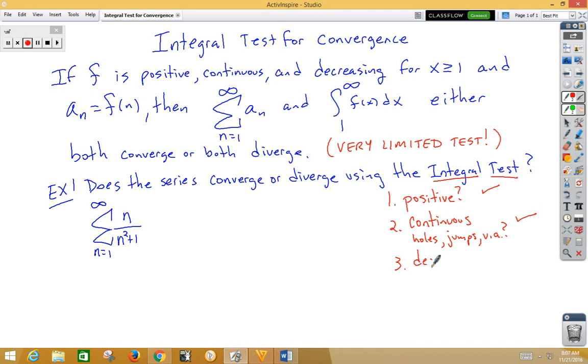Thirdly, is this a decreasing series? Do the terms get smaller and smaller as we head to infinity? Well, heading to infinity is n behavior, and this is a low high, and a low high is indeed going to go to zero, so it is decreasing. So we can use the integral test, but we had to go through all of those steps to make sure we could.